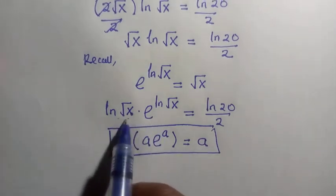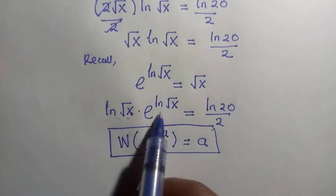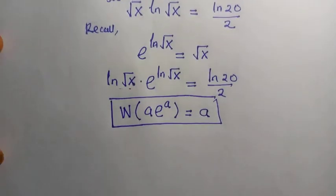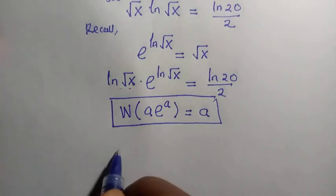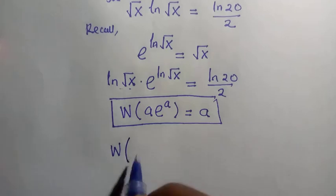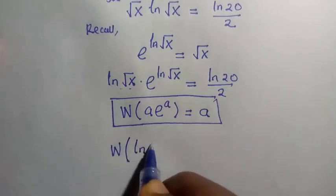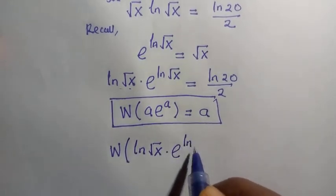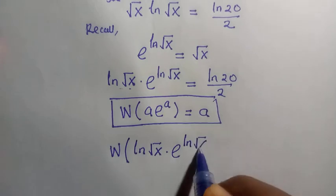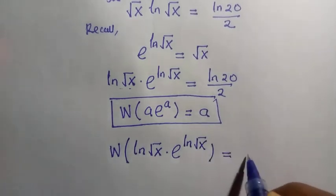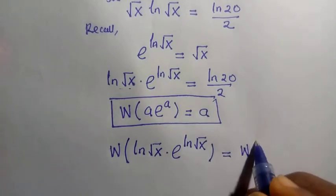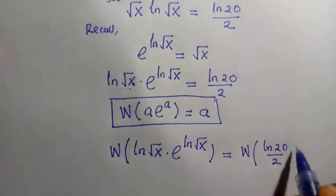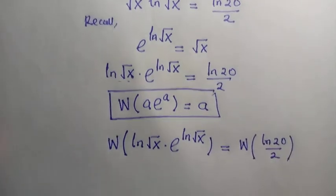Then with this one, when we try to introduce it, since what we have here is ln root x and what we have here is also ln root x, we try to introduce this function so that we get the results. So here we have omega of ln root x multiplied by exponential of ln root x, equals omega of ln 20 divided by 2.